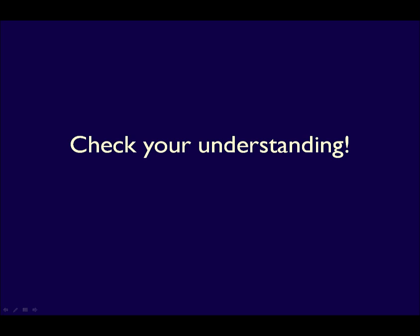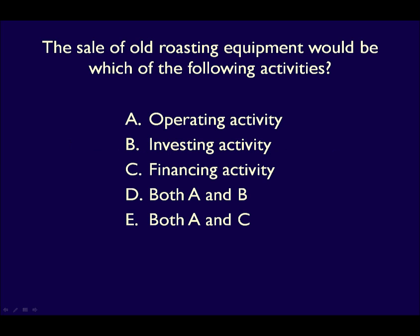Let's double check your understanding of the types of business activities. Remember, pause the video and answer the question yourself first before I give you the answer. In your coffee bean business, if you sold your old roasting equipment, it would be considered what type of activity? If you said operating activities because you sold something, you're incorrect — you are not selling old equipment as your normal day-to-day activities, so the inflow of cash from the sale of old equipment is not part of your operating activities. If you said financing because it caused an inflow of cash, you're also wrong — financing is only debt or equity financing and is never due to the sale of anything. Since it's not A or C, the correct answer is B: investing activities. The purchase of your original equipment was included in investing activities, and because of that, the sale belongs in the same category.